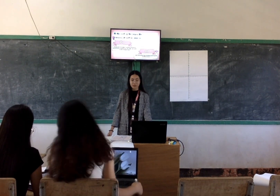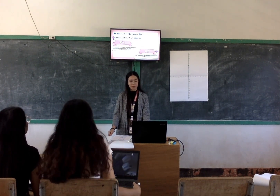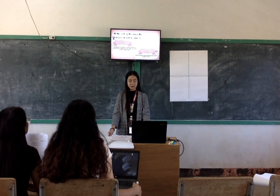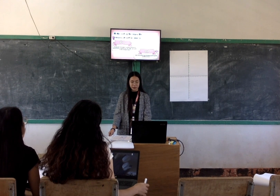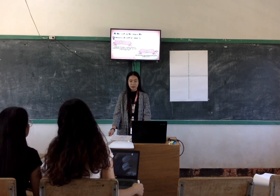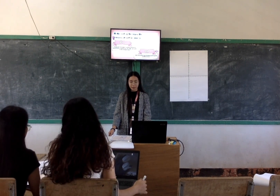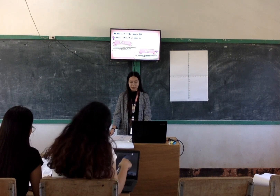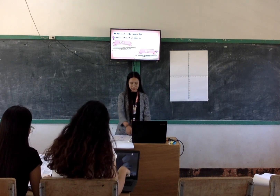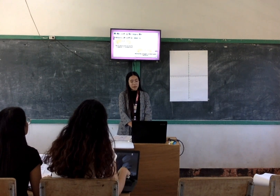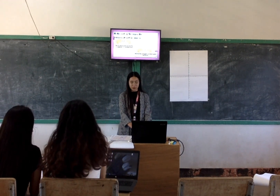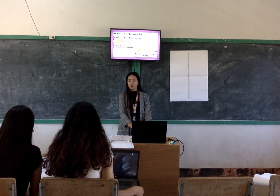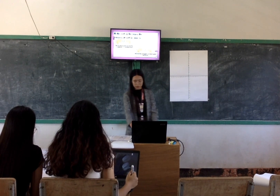At the end of this lesson, the learner should be able to: first, describe the rectangular coordinate system and illustrate the coordinate axes, the origin, and the points of the coordinate plane. Second, cite the practical uses of plotting points on the coordinate plane. Third, plot the coordinate points and identify their quadrants on the coordinate plane. Fourth, illustrate the rectangular coordinate system and its uses.